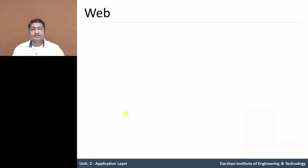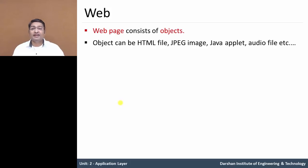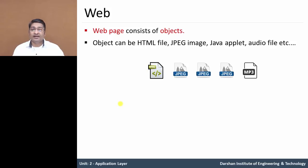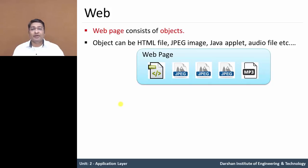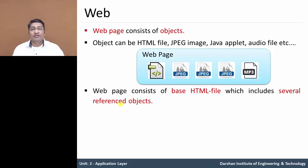So what is a website? A website is a collection of web pages. A web page consists of objects. Objects include HTML files, JPG files, MP3 and audio files. All these objects together make a page called a web page. The web page consists of a base HTML file which includes several referenced objects.